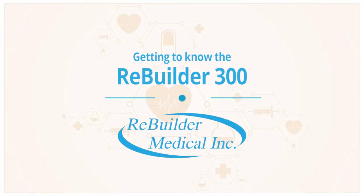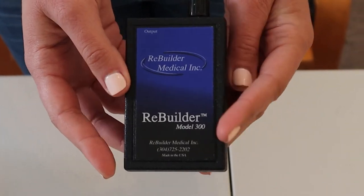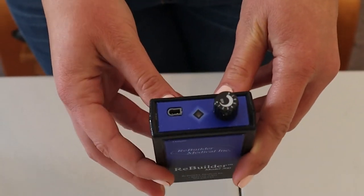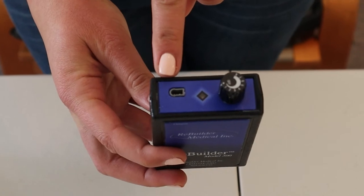Getting to know the Rebuilder 300. The Rebuilder 300 has one output to operate one set of lead wires.